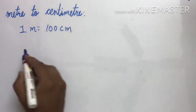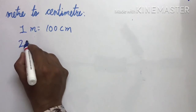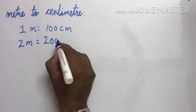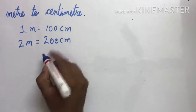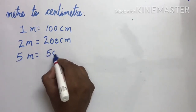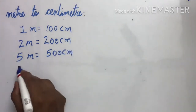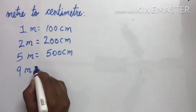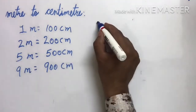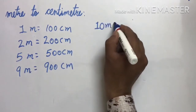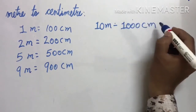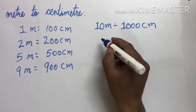One meter is 100 cm. If 2 meter, how much is it? 200 cm. 5 meter is 500 cm. 9 meter is 900 cm. 10 meter is 1,000 cm. It means 100 is being multiplied with each number — सब के साथ 100 multiply हो रहा है।